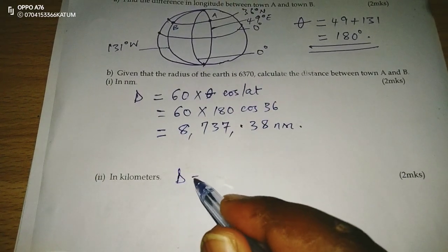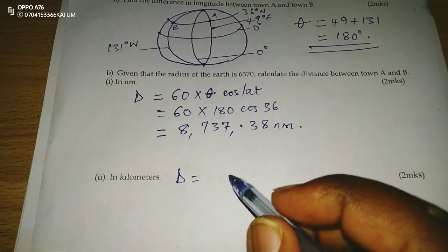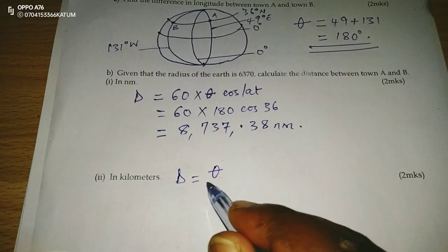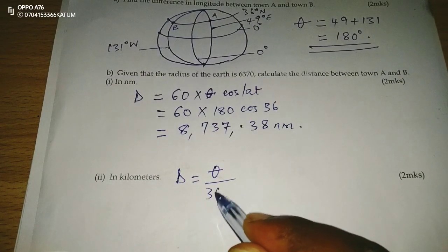The next is distance in kilometers, still along the small circle. Distance in kilometers will be given by the angle difference over 360,